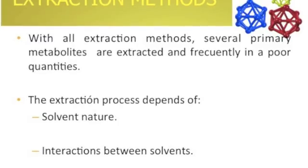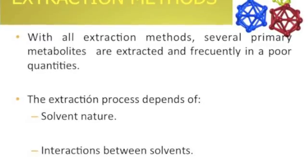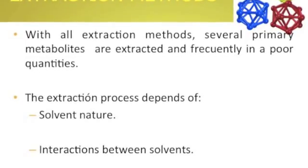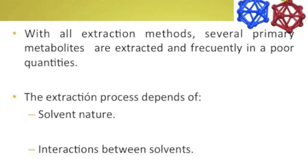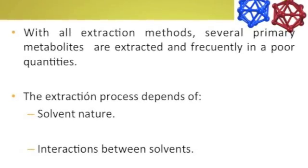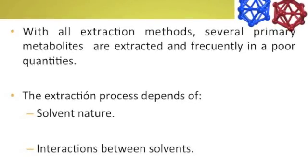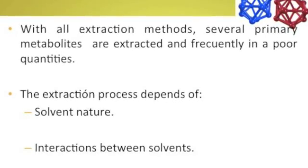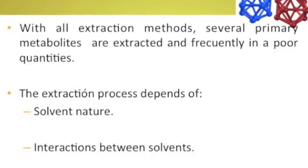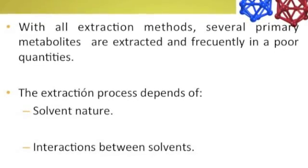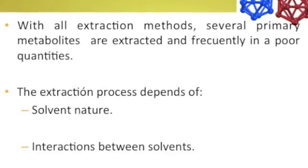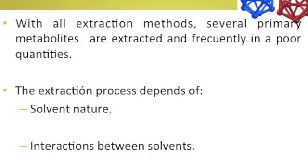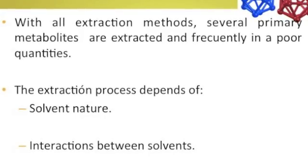Now we're going to talk about the extraction methods. With all extraction methods, several primary metabolites are extracted, frequently in poor quantities — and this is a great problem. The extraction process depends mainly on three variables: first, solvent nature; second, interaction between the solvents for a successful extraction process; and third, the intrinsic properties of the material.